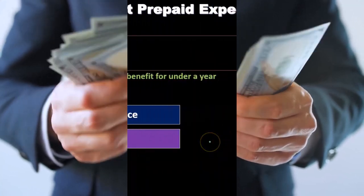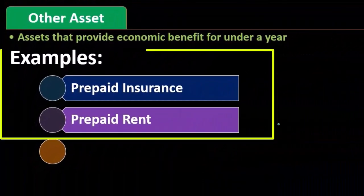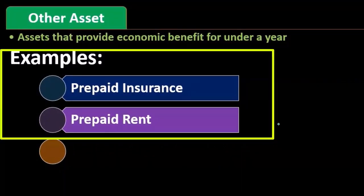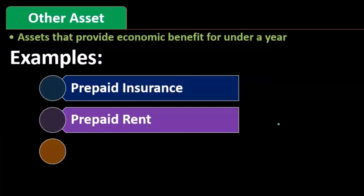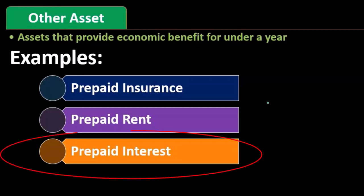But we could also prepay things like rent. Rent is another item where there may be circumstances in which prepaying would be a smart thing to do. In that case, we would treat the prepayment and the audit of it in a similar fashion as we would for prepaid insurance. We could also have prepaid interest in a similar fashion.